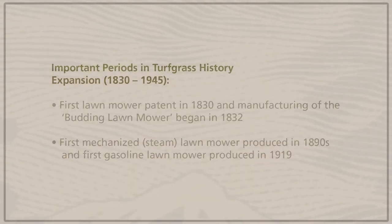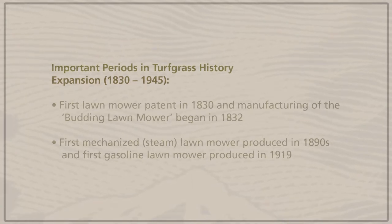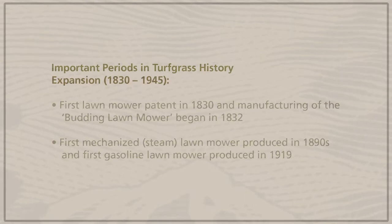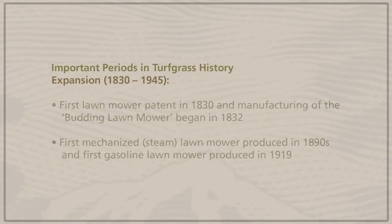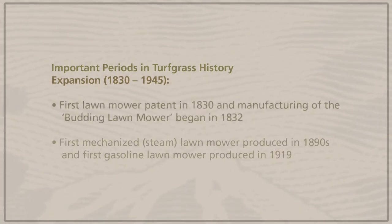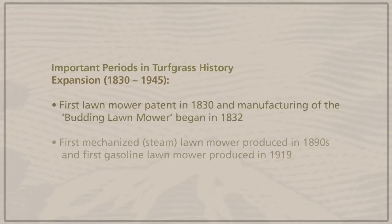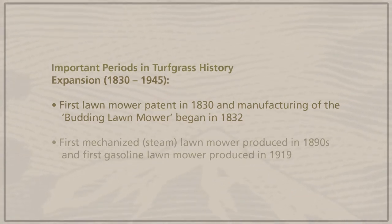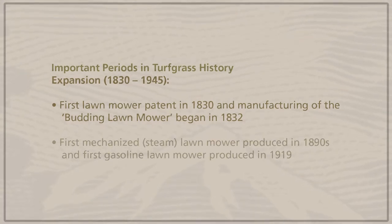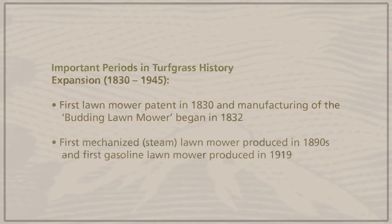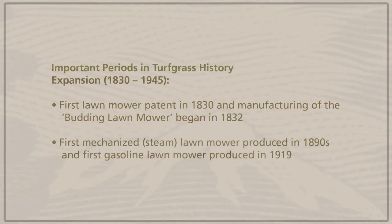As we move forward in turf grass history, there was a big expansion period from the 1830s to 1945 when lawns became much more popular and commonplace throughout the United States. Some key periods during that time: in 1830, the first lawn mower patent was provided, and manufacturing began in 1832 — the Budding lawn mower, the first mechanized lawn mower, powered by steam.